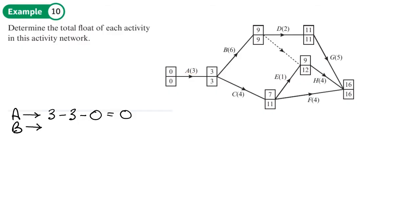Moving on to activity B, which is a bit trickier because it's sideways. Sometimes it's easier to look at it drawn straight rather than sideways. Taking the top of the first box and the bottom of the second box: 9 minus 6 minus 3, giving activity B a float of 0.